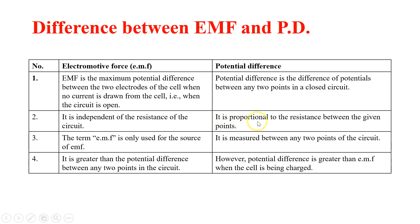EMF is independent of resistance, while potential difference is totally dependent on the resistance between the given points. The term EMF is only used for the source, while potential difference is measured between any two points of the circuit. EMF is greater than potential difference, however when a cell is being charged, the potential difference is greater than the EMF.